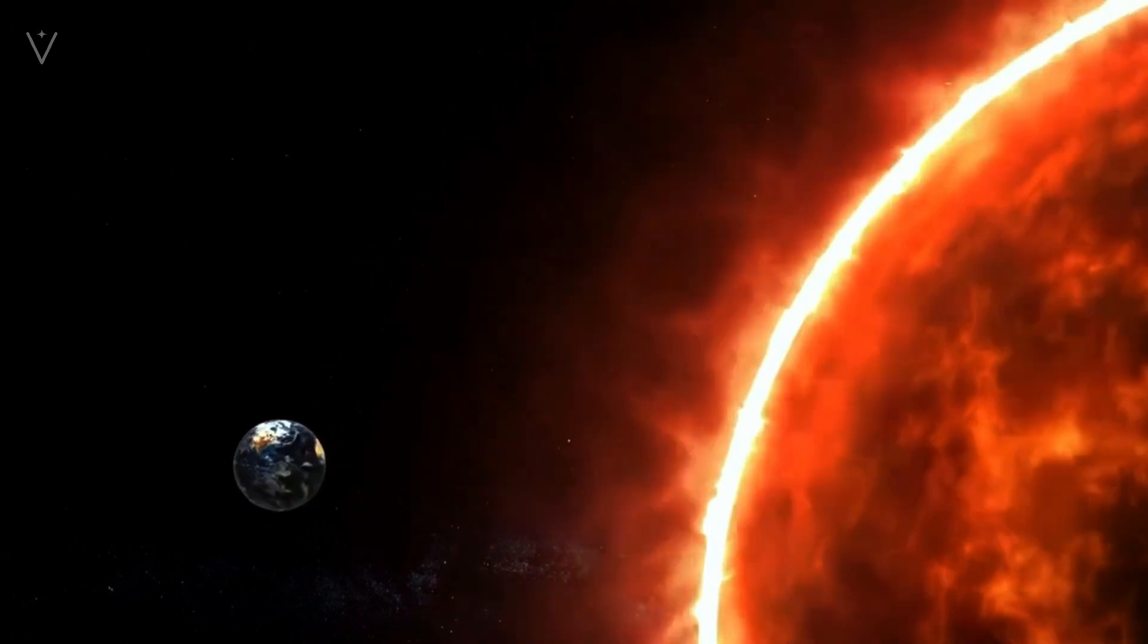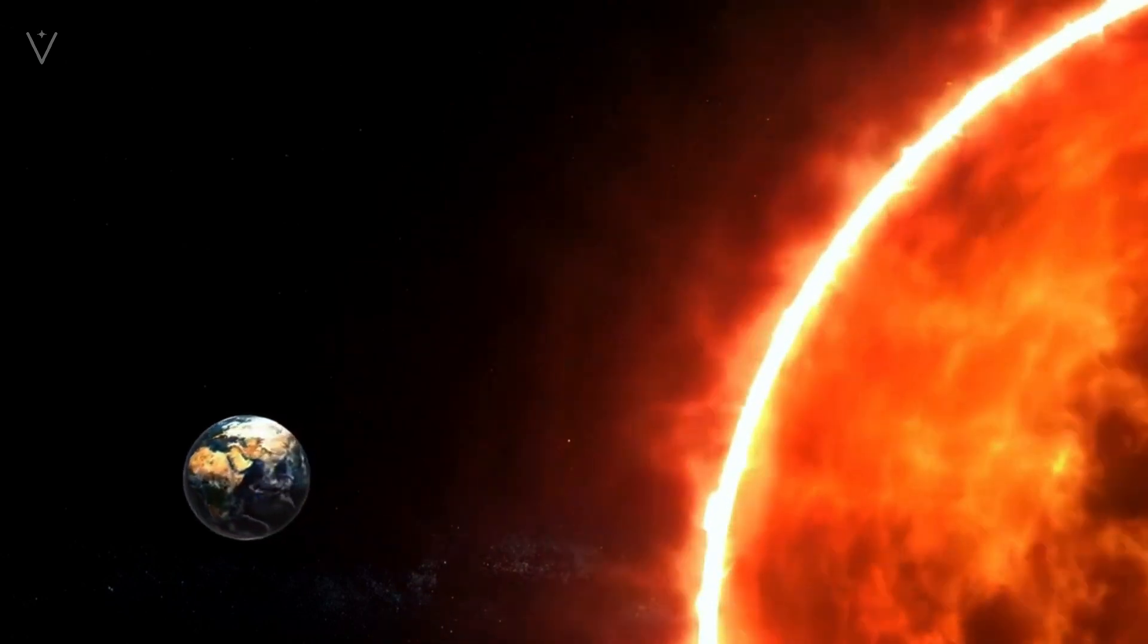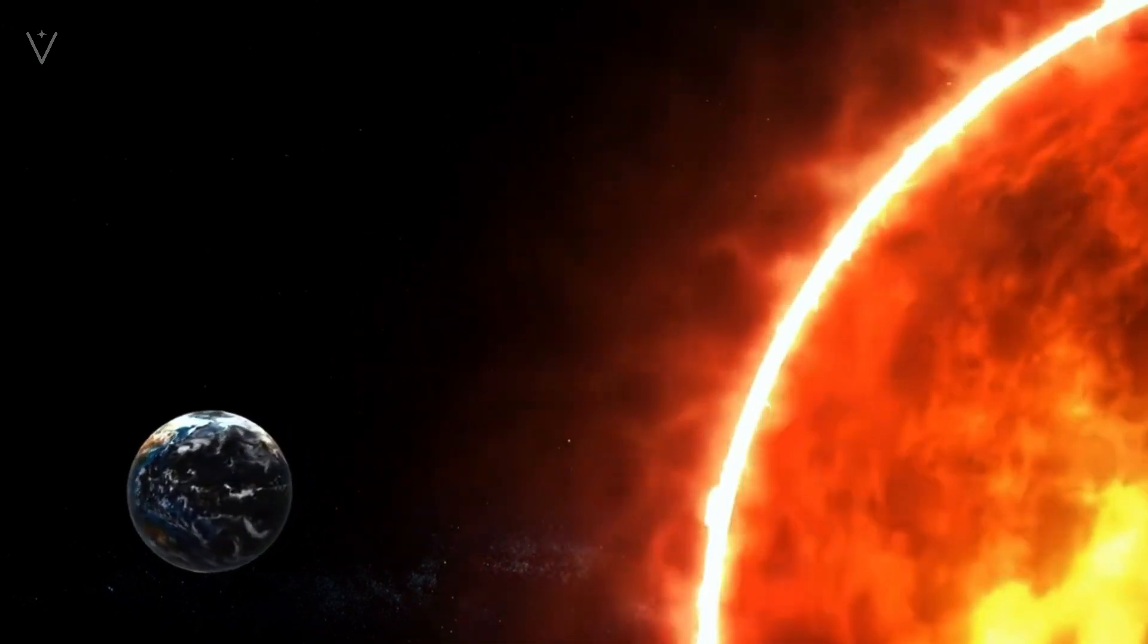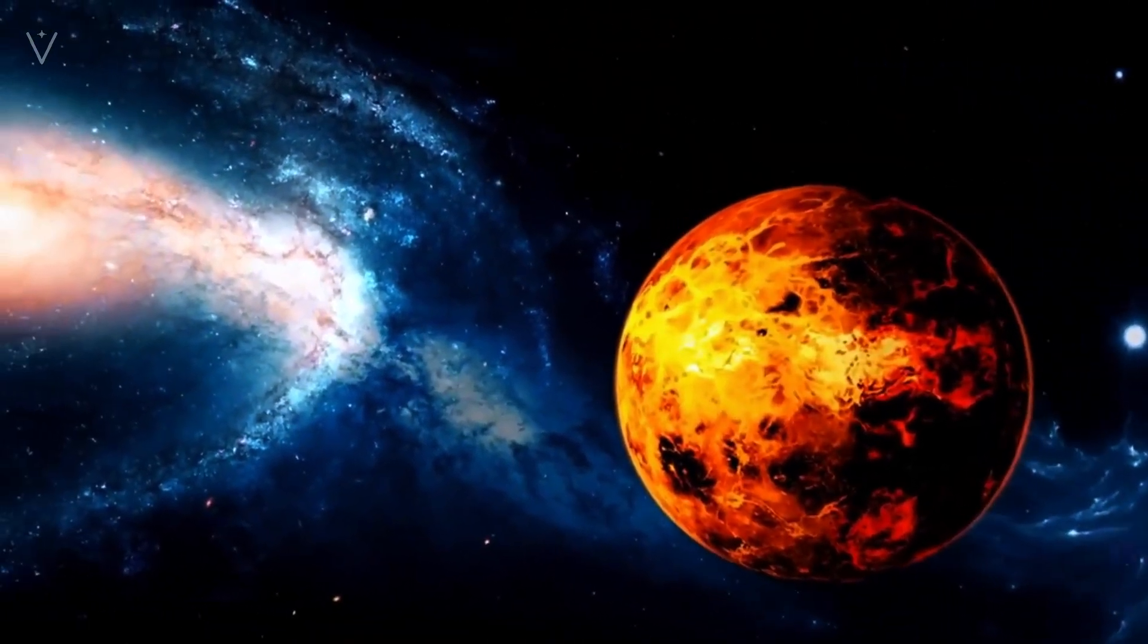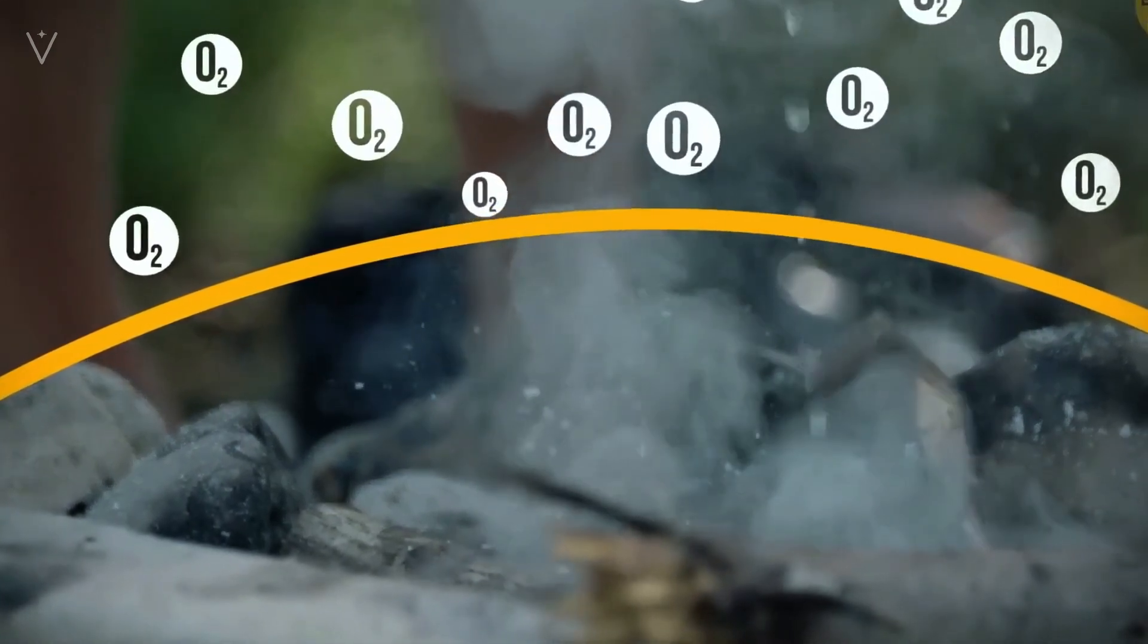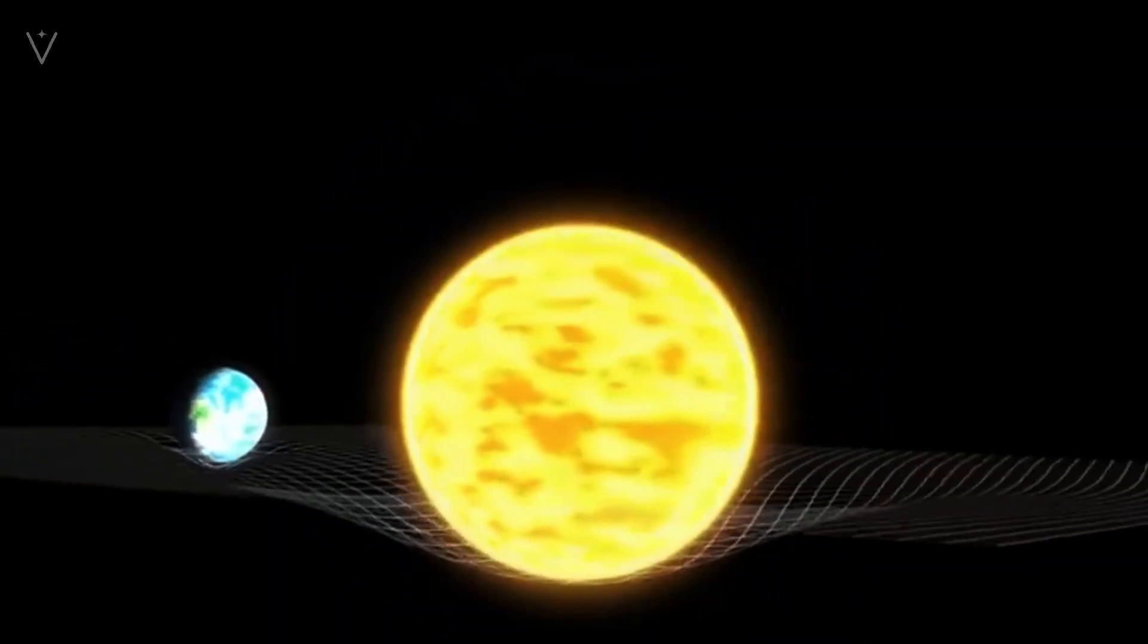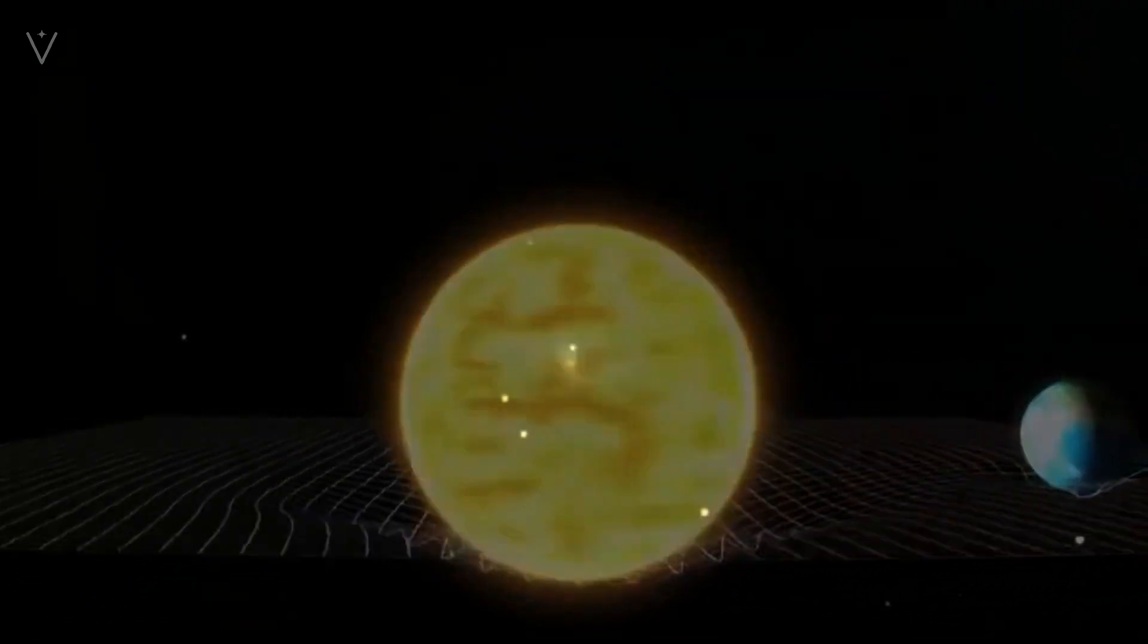To further elucidate this point, let us delve into a hypothetical scenario. What would happen if 4,000 trillion tons of water were poured onto the Sun? According to scientists' extensive exploration and precise calculations, the Sun's mass is approximately 2 trillion tons. Thus, 4,000 trillion tons of water is nearly twice the mass of the Sun.